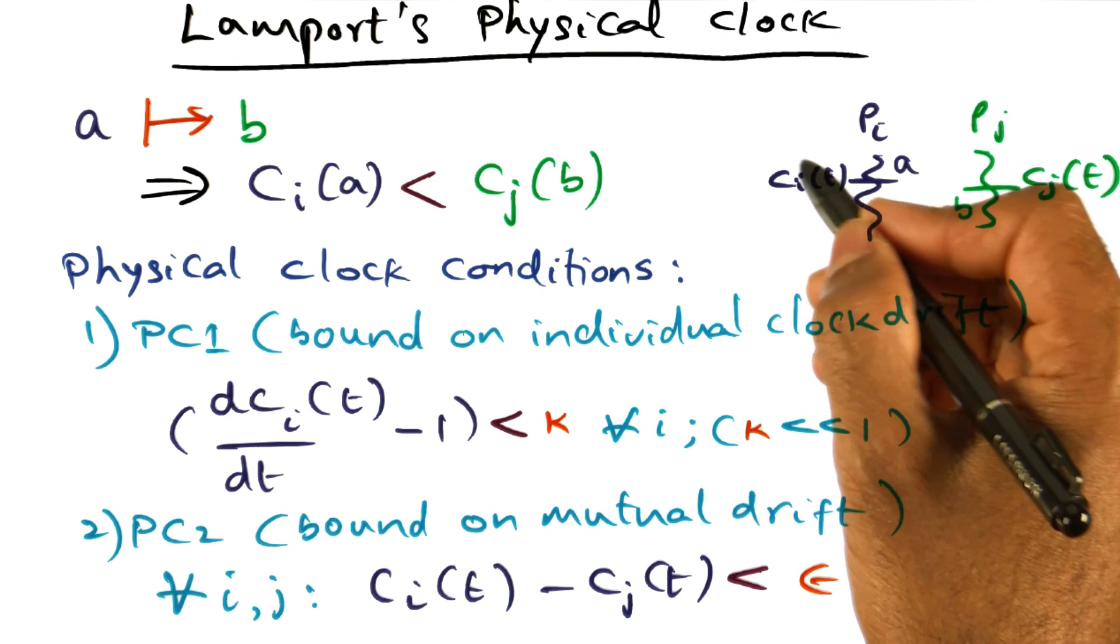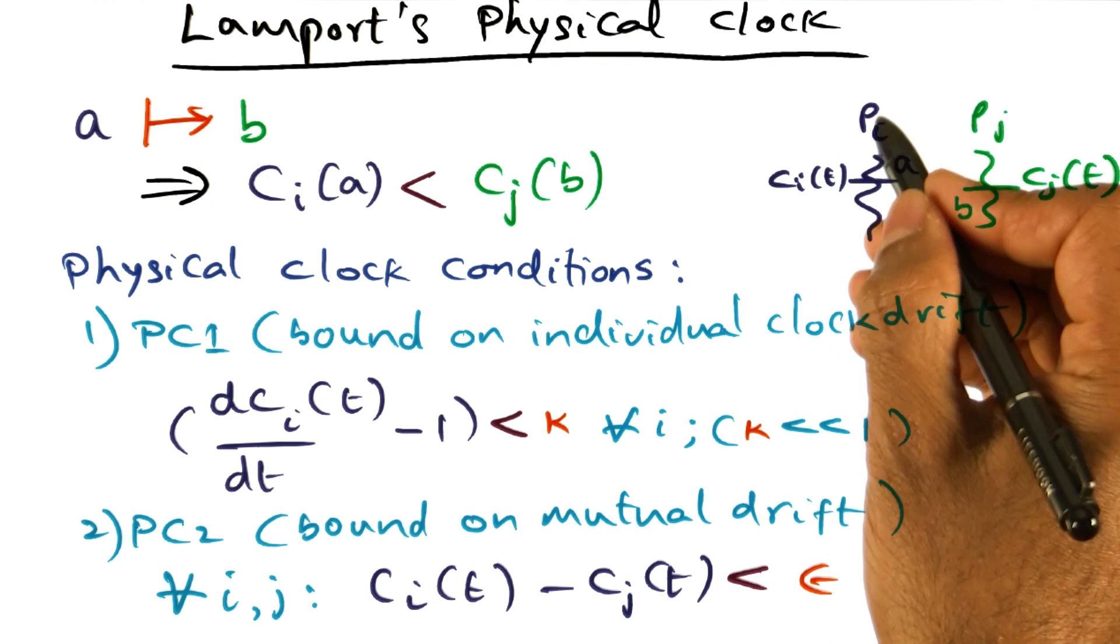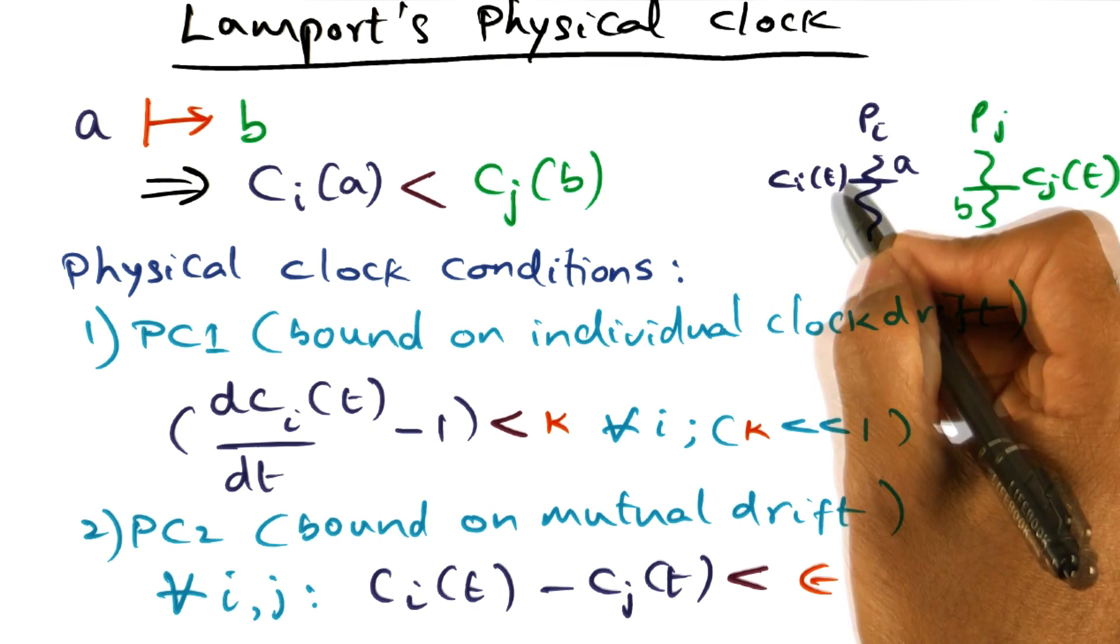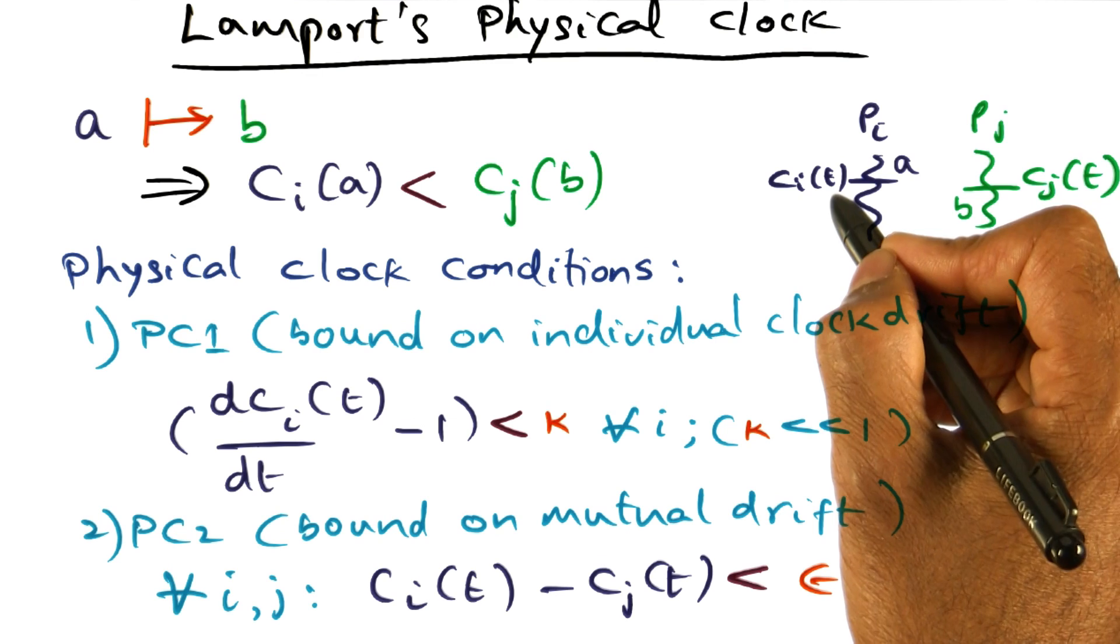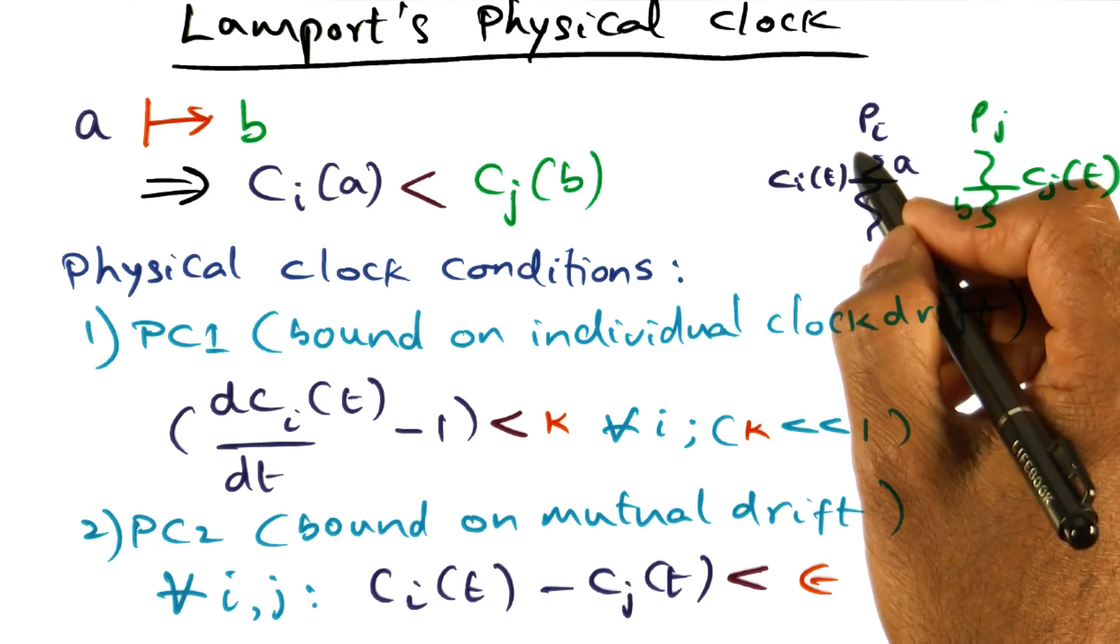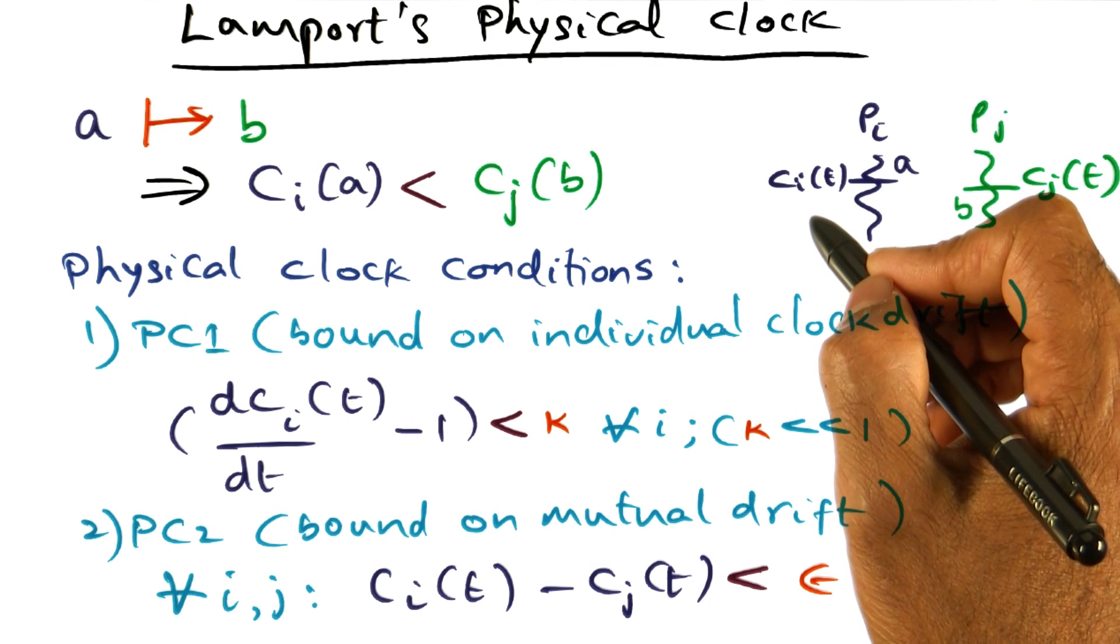If, what is the time that is read on process PI at time t? If t is the real time, at time t, I look at the clock on my machine, and that is CI of t, what should it read? Well, it should read t.